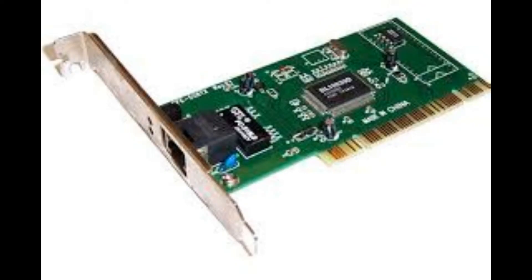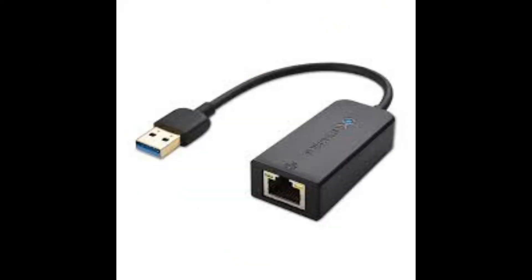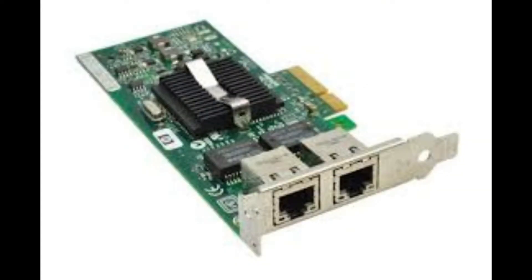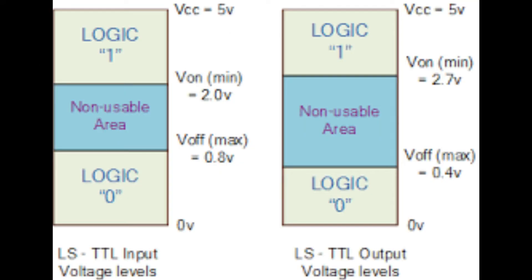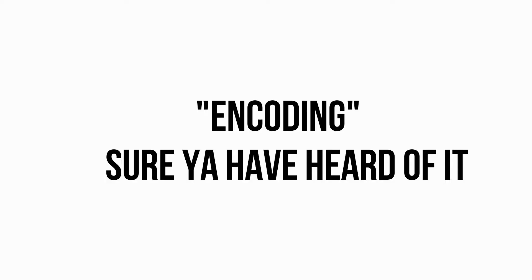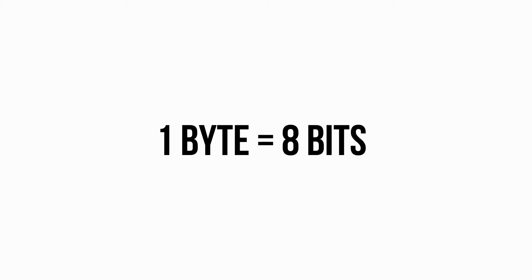A computer's network adapter, which is usually built in nowadays but can also be a USB, will then essentially translate those voltages into 1s and 0s, which are then used to communicate across the network. This is also known as the process of encoding.